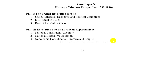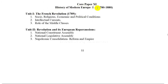5th semester history honors syllabus. History of Modern Europe between 1780 to 1880. Unit 1: The French Revolution 1789 — socio-religious, economic and political conditions, intellectual currents, role of middle classes.